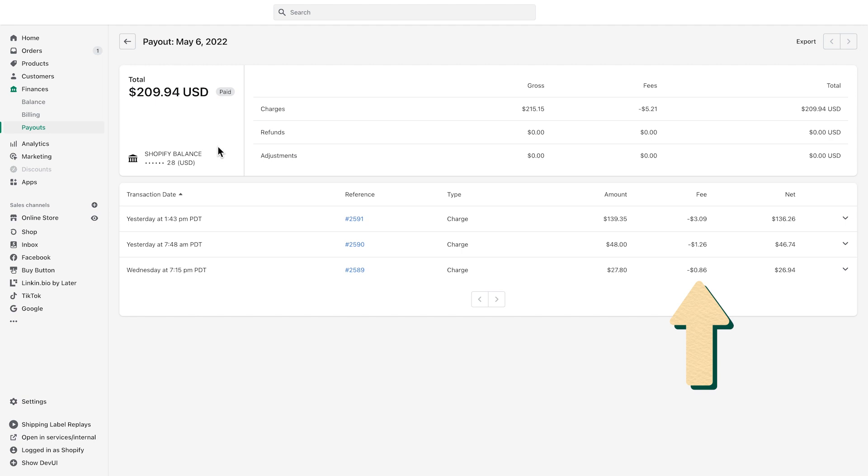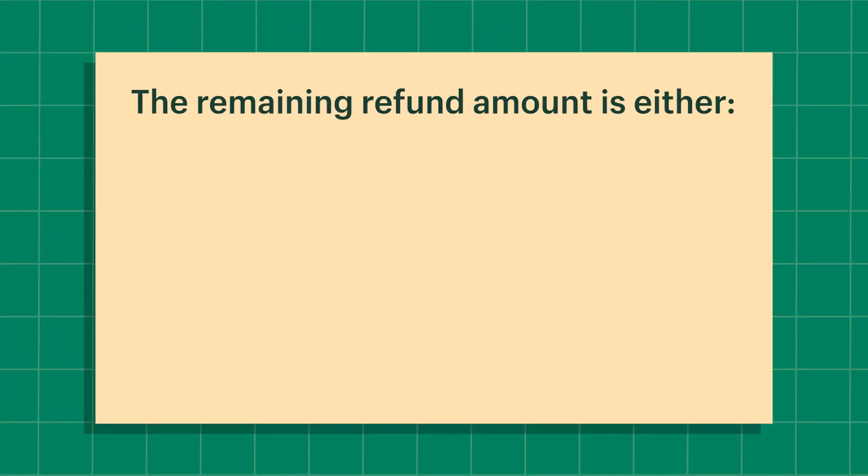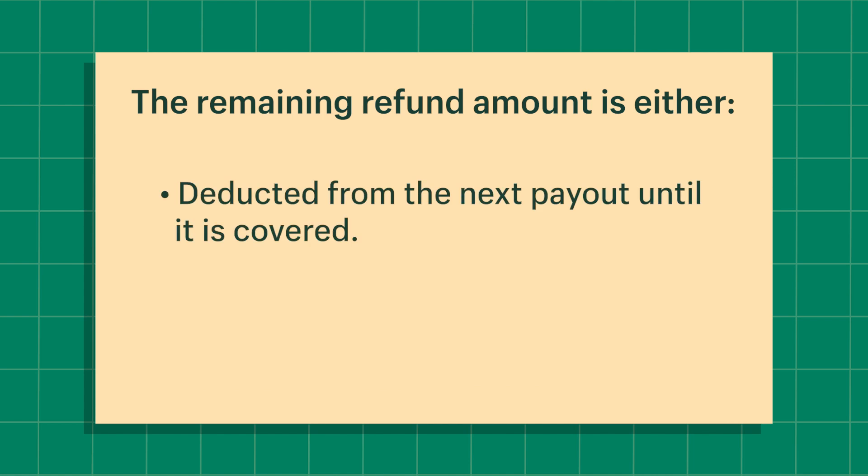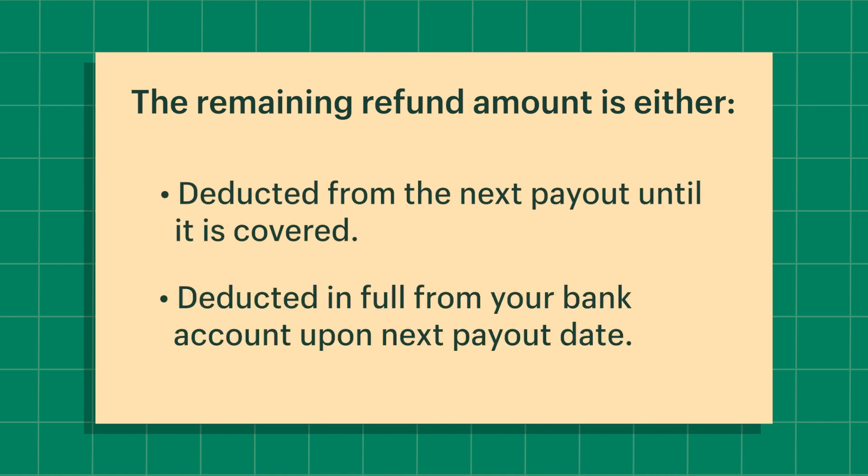These fees are subtracted from your charges to give you the final amount you receive. Also subtracted from the total charges are any refunds you've processed in this particular pay period. If your payout doesn't have enough funds for the return, there are two possible outcomes based on your location: the remaining amount for the refund is either deducted from the next payout until the full amount has been covered, or the balance is deducted in full from your bank account on the day of your payout. Keep in mind that when an order is refunded, the credit card fees for that order are not. If your payout's balance is negative, you might not be able to issue a refund. In this case, refunds are listed as pending until you have enough sales to have a positive balance.